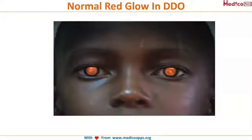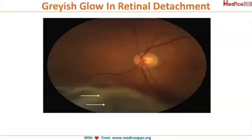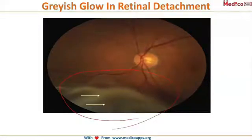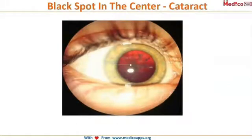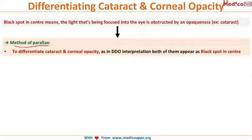A grayish glow in retinal detachment appears different from the normal red fundal glow. Black spots seen against the red fundal glow can indicate a cataract or corneal opacity. To differentiate between these two, the method of parallax is used. A black spot in the center means the light being focused into the eye is obstructed before reaching the retina, either at the lens or the cornea.